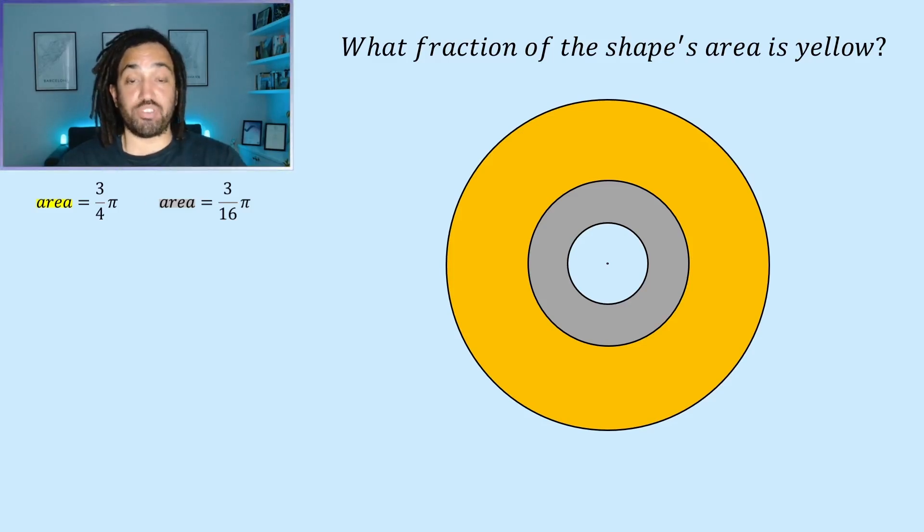I'm going to take a copy of the first two rings and scale it down by a factor of a quarter and this creates a similar shape. Similar shapes are in proportion with one another which critically means the shape's ratio of yellow to grey areas is the same for both.